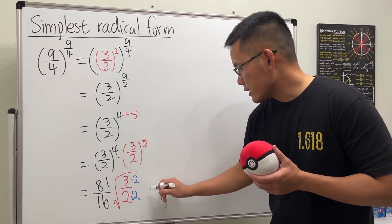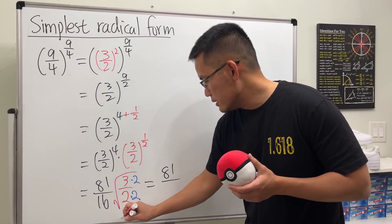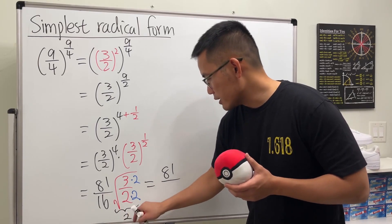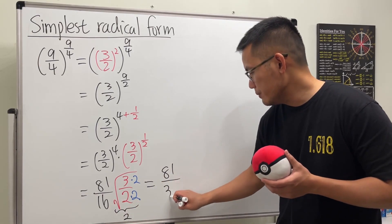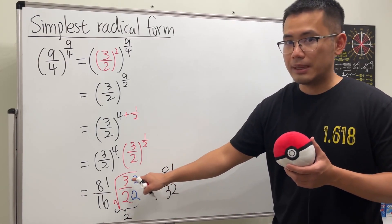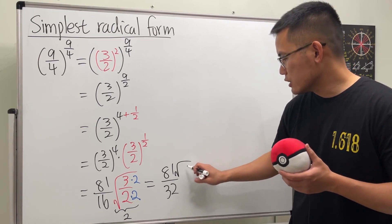So this right here will become, still right here we have 81. But this right here is just going to be a regular 2 on the bottom. So 2 times that, which is 32. And then right here, we have square root of 3 times 2, which is 6. And we can put it on the side, we'll put it on the top. Let's just put it on the top like so.